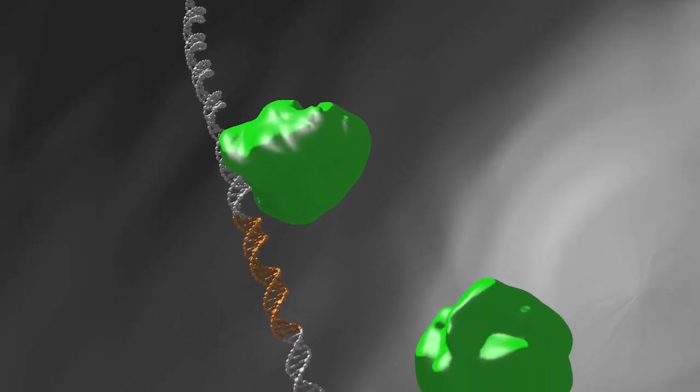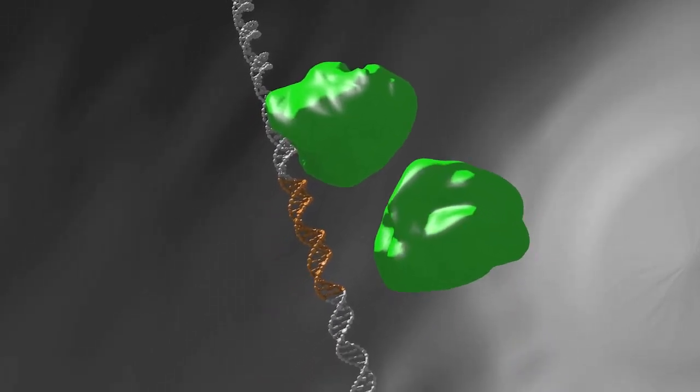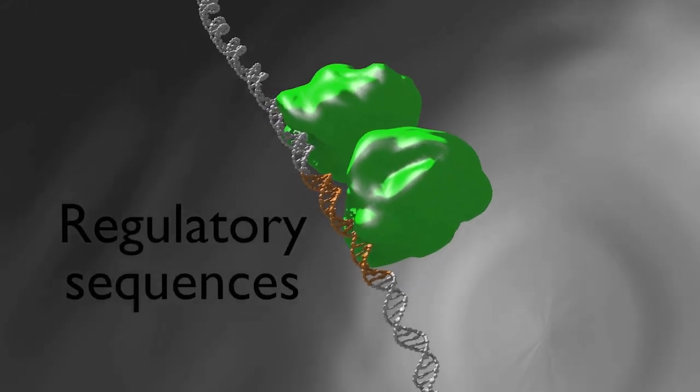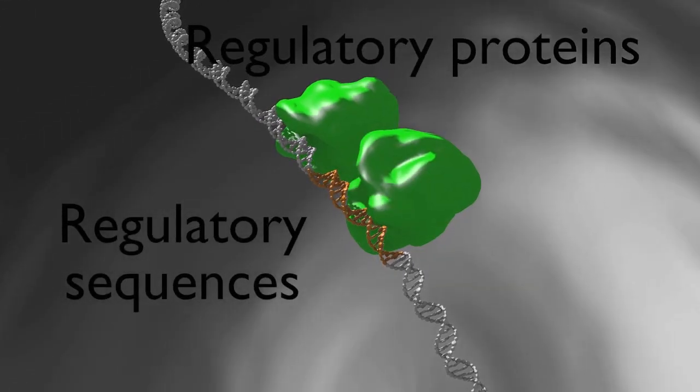Most genes are regulated by proteins that bind to the chromosome in the vicinity of the transcribed gene. Specific regions in the chromosome called regulatory sequences are the sites in the DNA to which regulatory proteins bind.